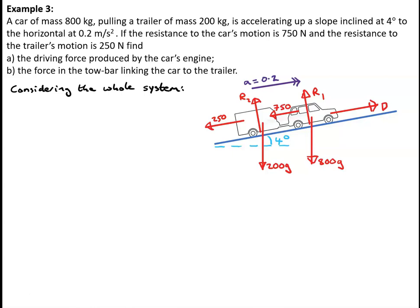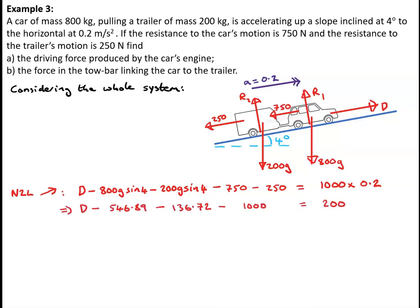Applying Newton's second law up the slope for the whole system: the driving force D minus 800g sin4 minus 200g sin4 minus 750 minus 250 must equal 1000 times 0.2. Tidying that up gives D minus 546.89 minus 136.72 minus 1000 equals 200. In other words, D is 1884 newtons.